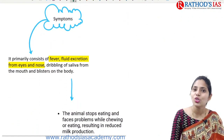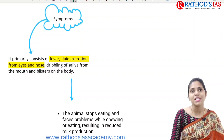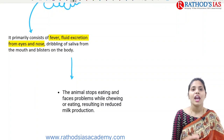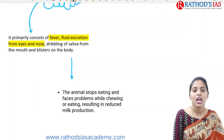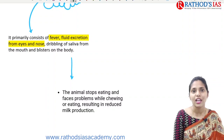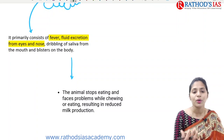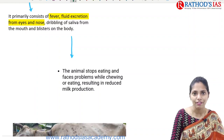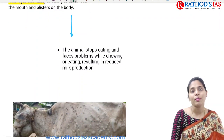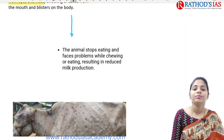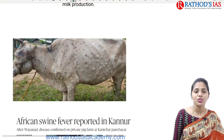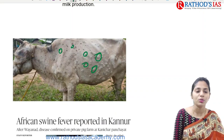Signs and symptoms of lumpy skin disease include fever, fluid excretion from eyes and nose, dribbling of saliva, blisters all over the body, and the animal stops eating. When it stops eating, milk production is affected and the animal faces problems with chewing grass. You can see in the image that cattle have blisters all over the body.